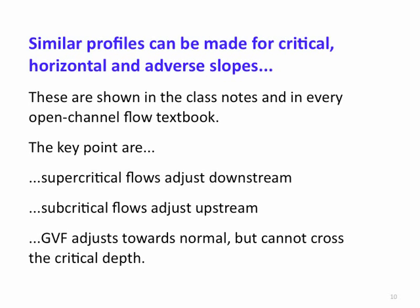The gradually varying flow is always adjusting towards normal, but it cannot cross the critical depth. Only rapidly varying flows will cross the critical depth in a single profile. We'll see later that flow can move downstream smoothly across the critical depth when moving between two very different channels. And that ends our discussion of gradually varying flow profiles.